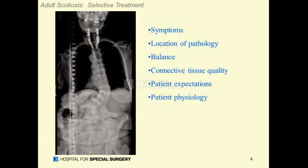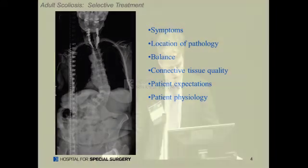It's important first to define what's going on with the patient — talking about balance in the coronal and sagittal plane, locations of nerve impingement, instabilities within the curve, the level of the pelvis, leg lengths, et cetera — before we treat patients as if they're all the same.